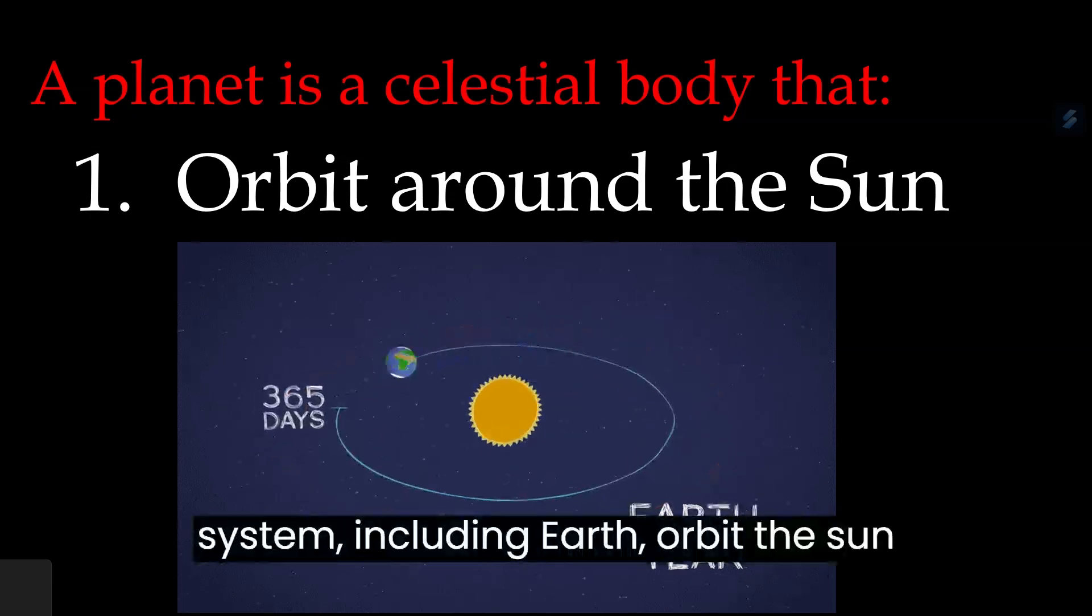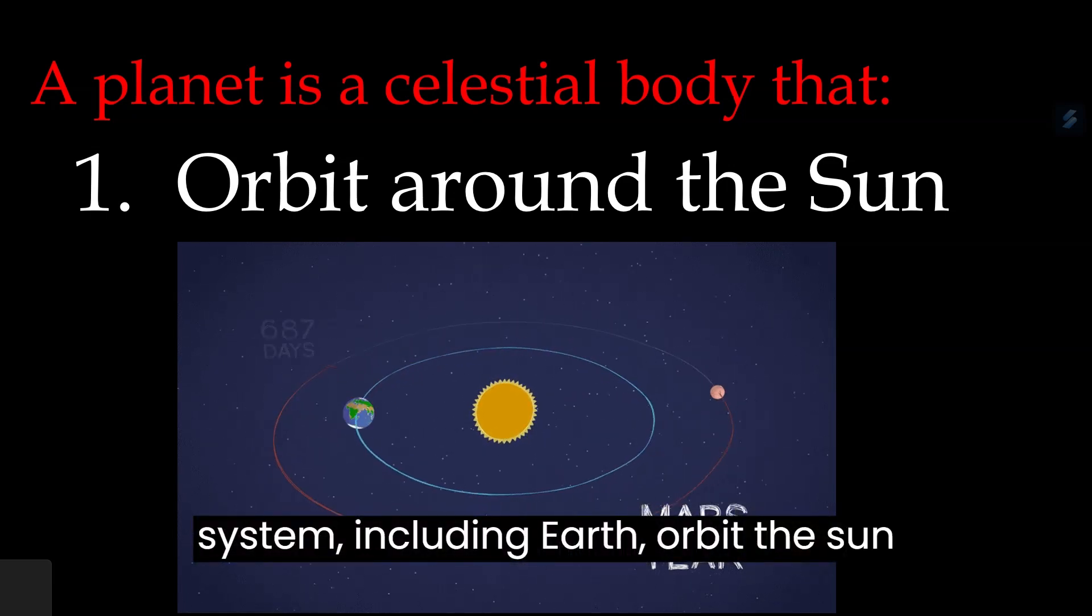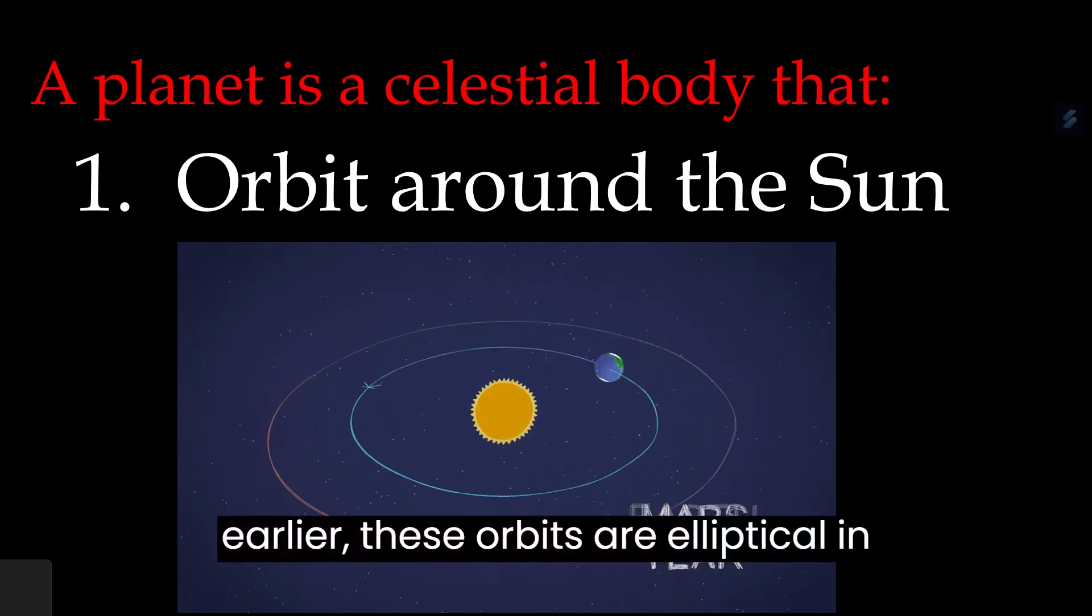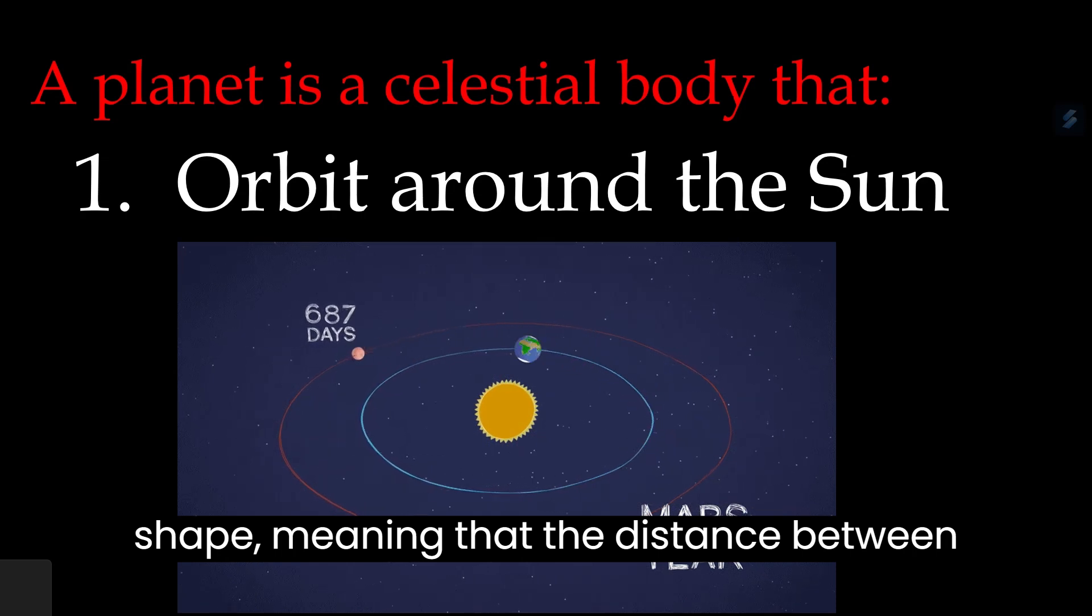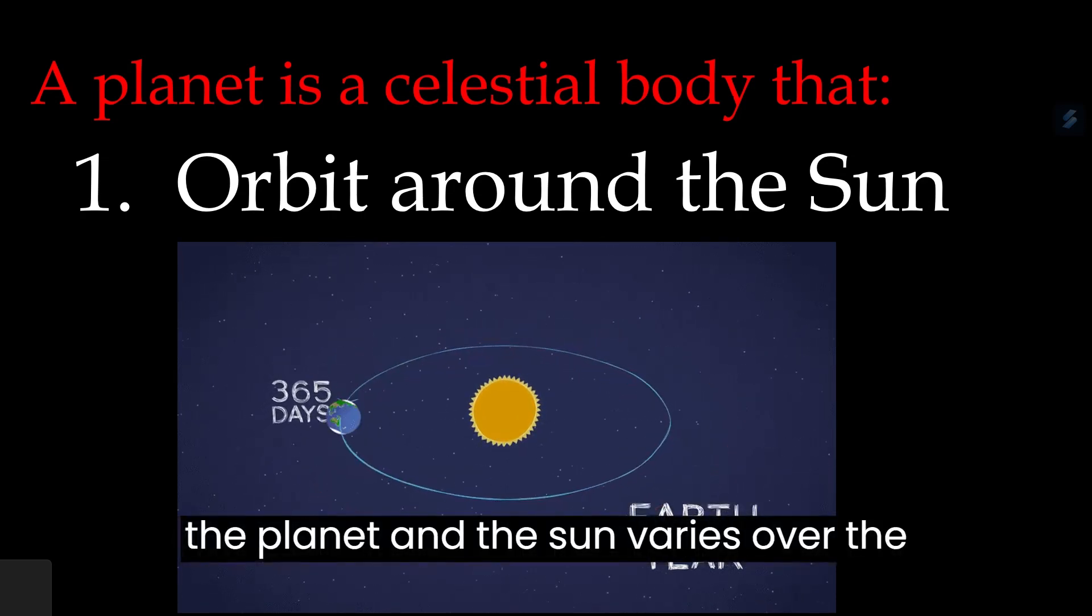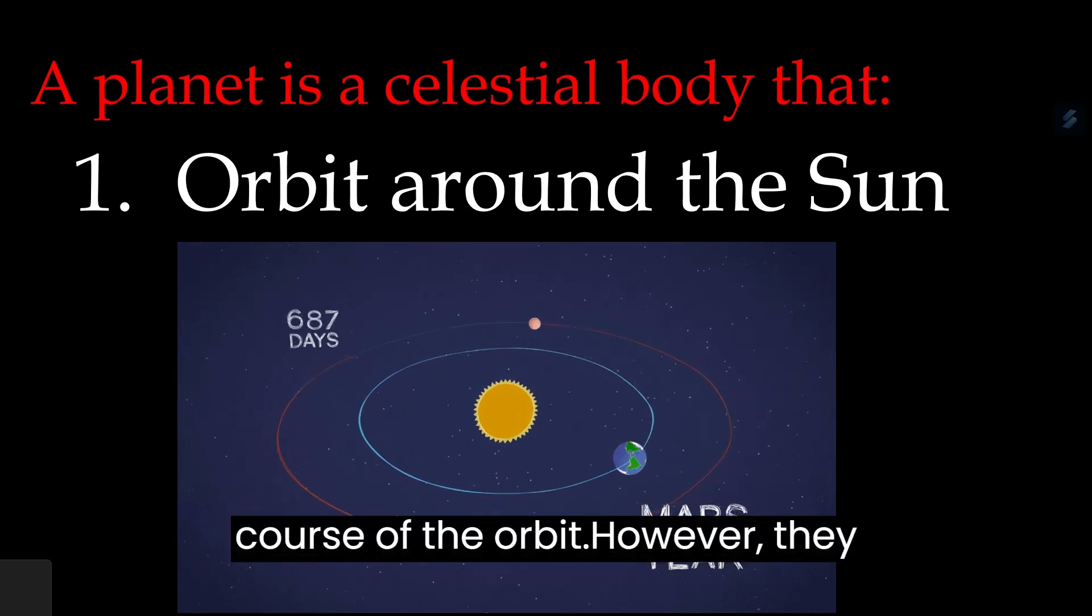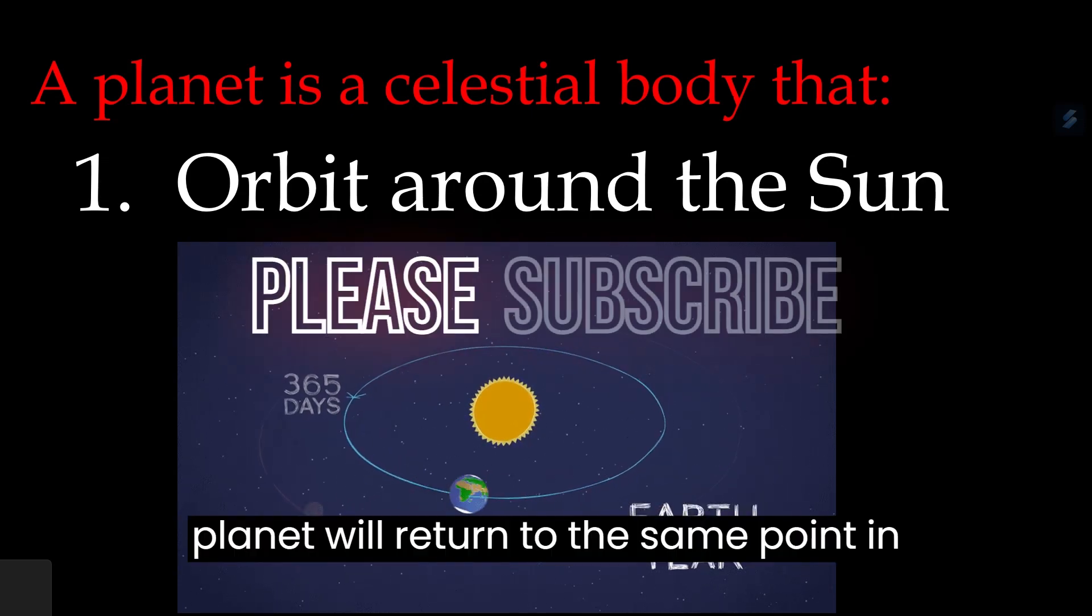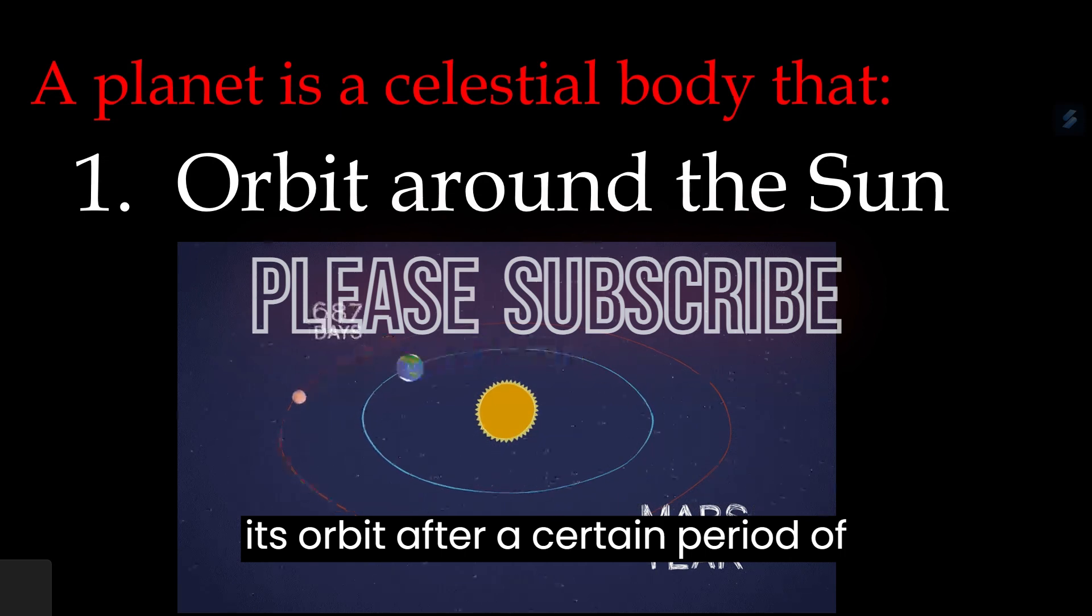All the planets in the solar system, including Earth, orbit the Sun in closed orbits. As mentioned earlier, these orbits are elliptical in shape, meaning that the distance between the planet and the Sun varies over the course of the orbit. However, they are closed orbits, meaning that the planet will return to the same point in its orbit after a certain period of time known as the planet's orbital period.